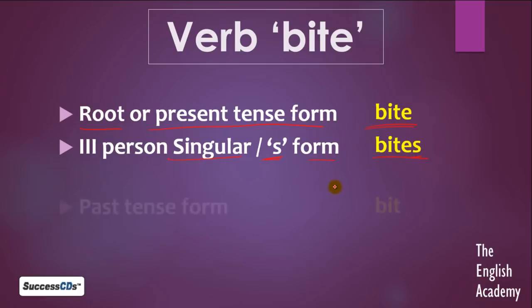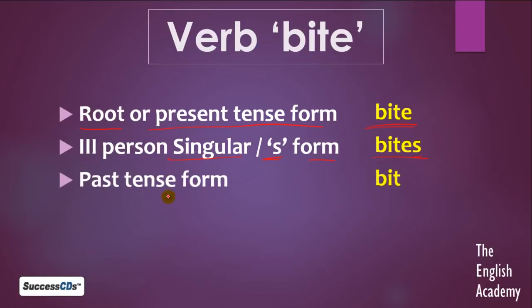Next form hai past tense form. Jab hum bhoot kaal mein sentence banayenge — jab hum kahenge 'kaata tha' — English mein hum kahenge bit. B-I-T, bit.